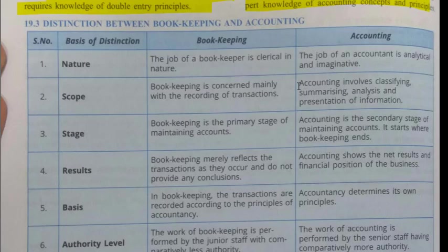Stage: bookkeeping is the primary stage of maintaining the accounts — it is the first step, the primary stage. Accounting is the secondary stage of maintaining records; it starts where bookkeeping ends. Results: bookkeeping merely reflects the transactions as they occur and does not provide any conclusion, whereas accounting shows the net result and financial position of the business.